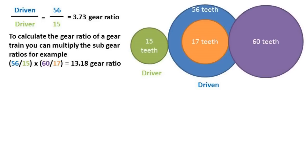To calculate the gear ratio of a gear train, you can multiply the sub-gear ratios together. In this example, we can take the first driven and driver gear ratio and multiply times the second driven and driver ratio. We get a gear ratio of 13.18.